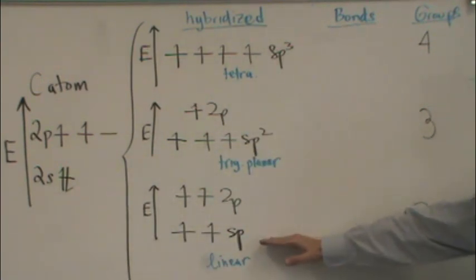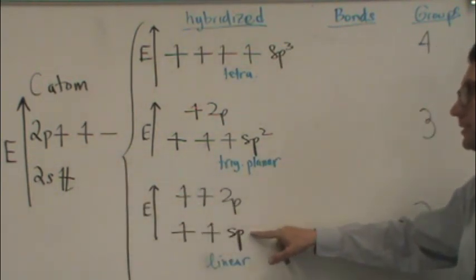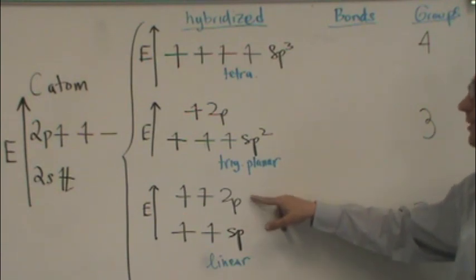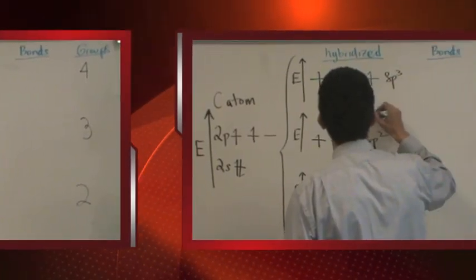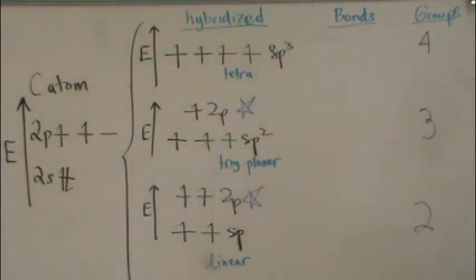And then for the SP, it means that one of the 2S and one of the 2Ps hybridize to give two SP orbitals. And then two of the 2P orbitals stay unhybridized. I'll put a star. This one and this one, the 2Ps, are unhybridized atomic orbitals.